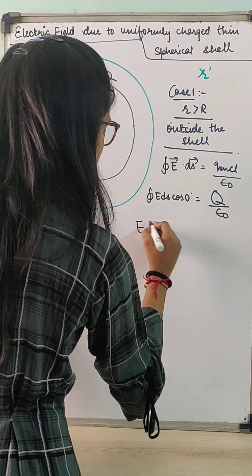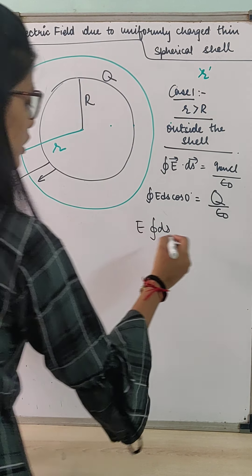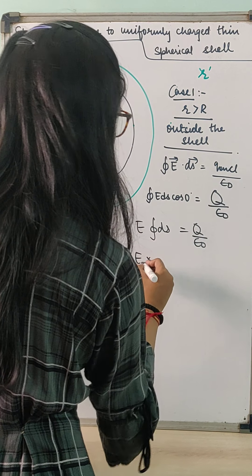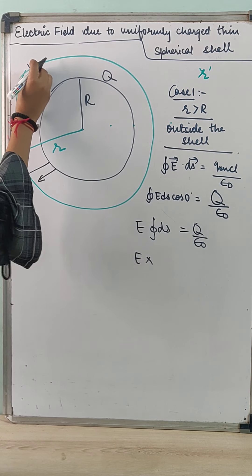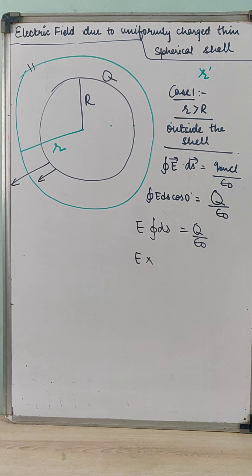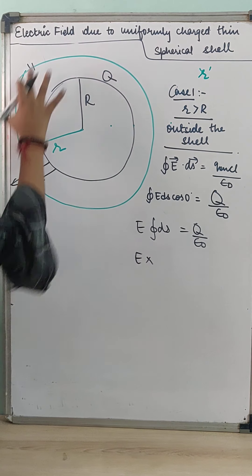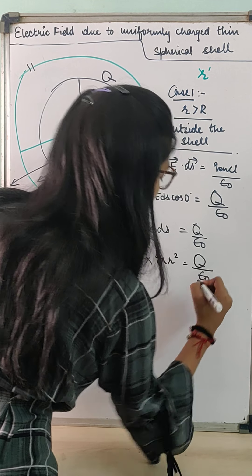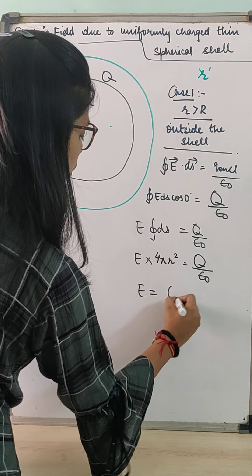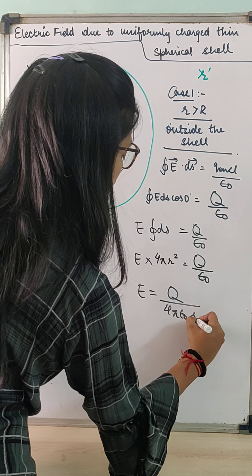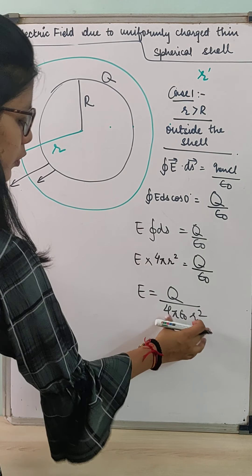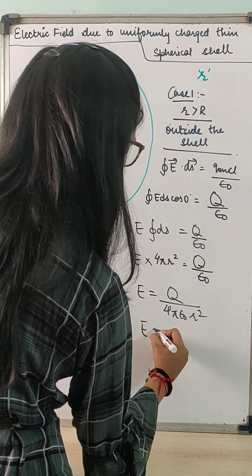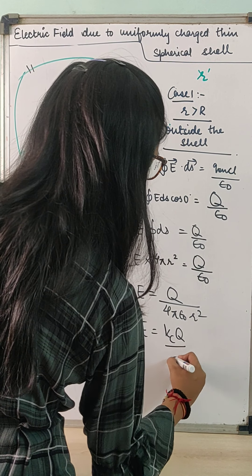Taking symmetry into consideration, E comes outside the integration. The integral of ds over the complete spherical Gaussian surface equals the total surface area, which is 4 pi r squared. So E into 4 pi r squared equals Q divided by epsilon naught, giving E equal to Q upon 4 pi epsilon naught r squared. Writing 1 upon 4 pi epsilon naught as Kc, we get E equals Kc capital Q by r squared.